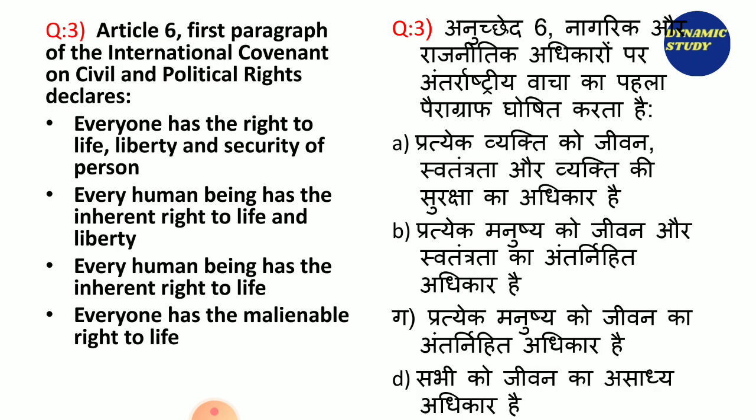Next question: Article 6, first paragraph of the International Covenant on Civil and Political Rights declares — 1. everyone has the right to life, liberty and security of a person; 2. every human being has the inherent right to life and liberty; 3. every human being has the inherent right to life; 4. everyone has the right to life.